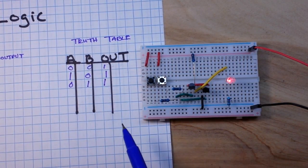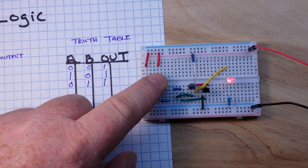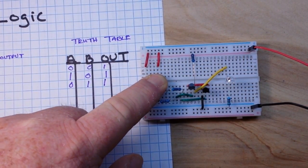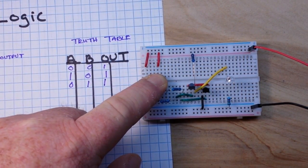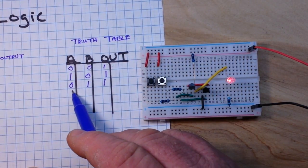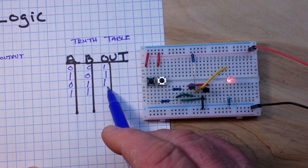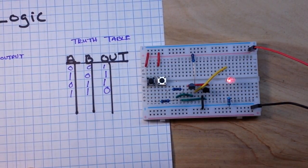And then finally if we make them both true, our output is now 0. And that's the operation of the NAND gate.